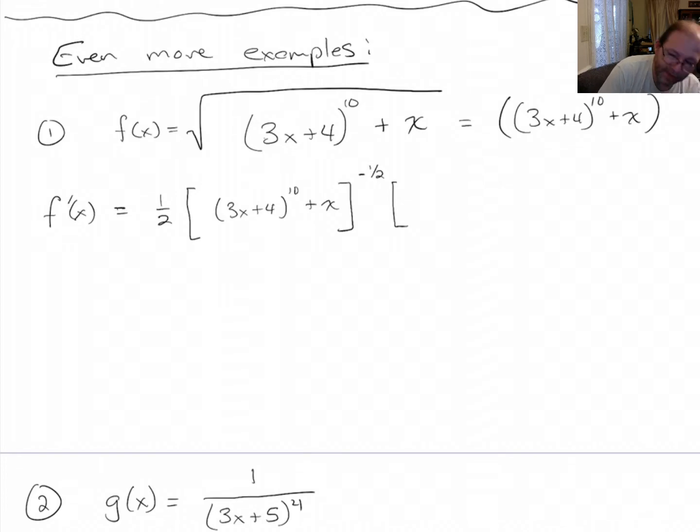Then we've got to multiply by the derivative of what's inside. So the derivative of this is going to be 10 times (3x + 4) to the ninth. And since that's an inside function there, we have to multiply by 3. Then the derivative of x is 1.